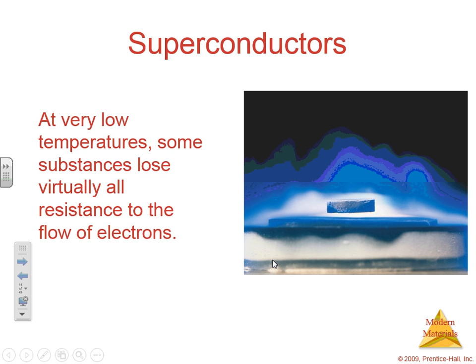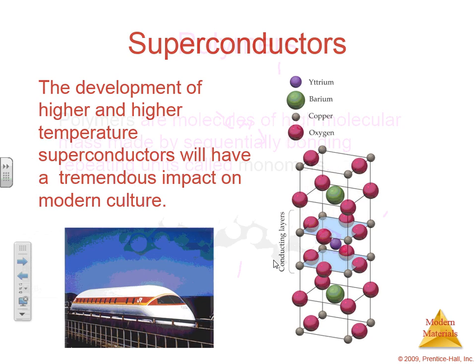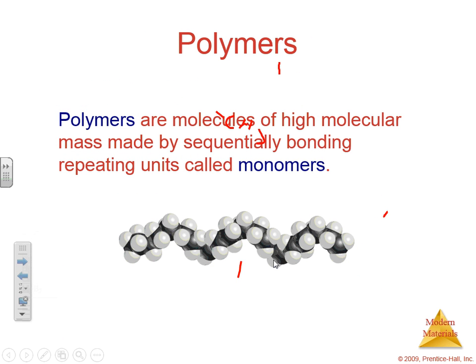Superconductors: at very low temperatures, some substances lose all resistance to the flow of electrons. Resistance is like electrical friction. Imagine in a wire, those electrons flowing through it have some resistance. There are substances which eliminate that resistance — essentially like an electron moving down an ice rink. This is super helpful because resistance creates heat and slows down electricity. The faster a conductor moves, the more efficient it can be. We're not going to focus a lot on superconductors.